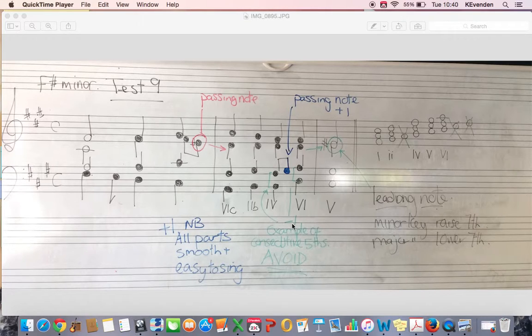So just think about that when you're writing your lines. And this is a stylistic thing. Try if you can, don't get too caught up in it, but try to have one line ascending and one line descending. We call that contrary motion.